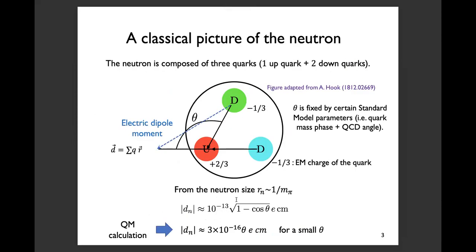This discrepancy originated from the technical root vector and the mass difference between the quarks and the pion mass, which gives rise to a factor of about 10^{-3}. That's the difference.